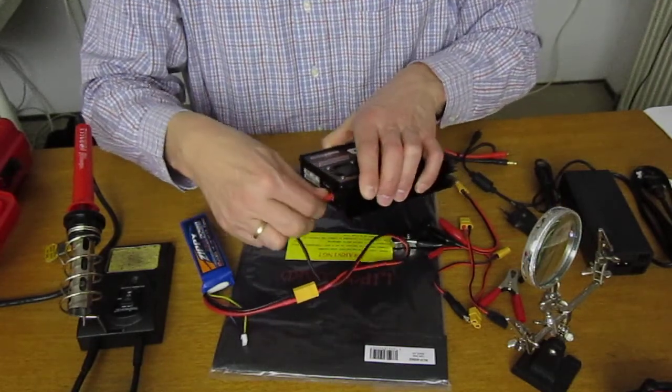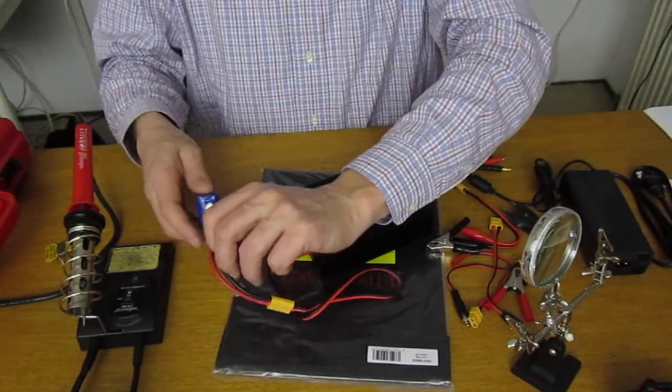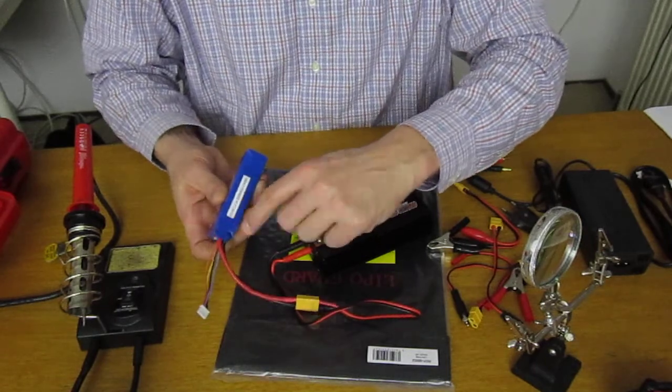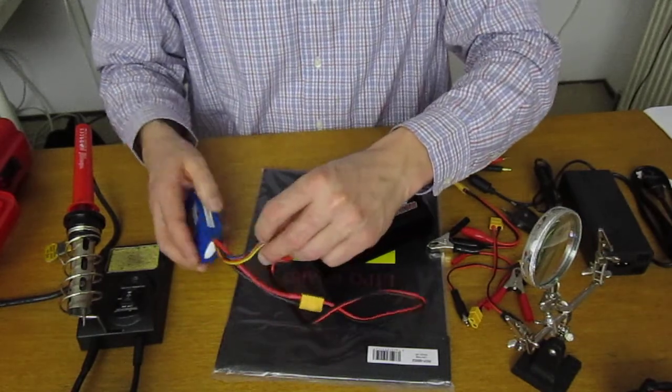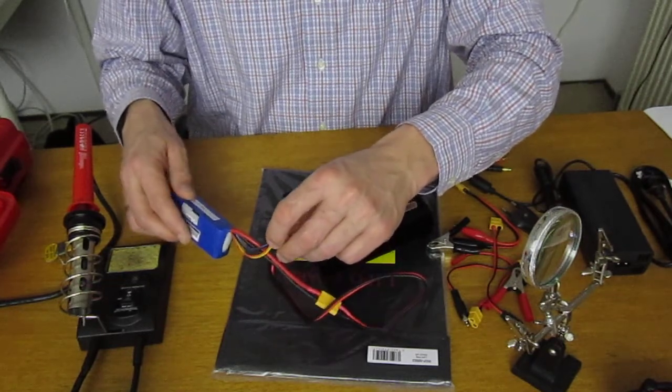Before using it, turn off the balance charger. This battery is 11.1 volts, which means that there are three cells in it, each cell having 3.7 volts.